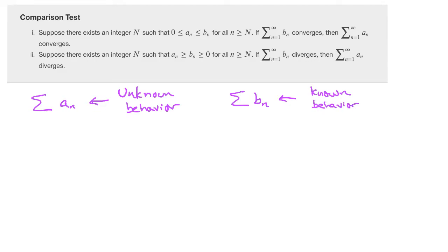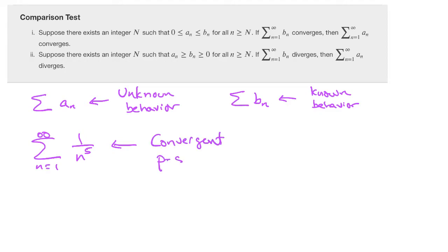In this case, our candidate series is the sum from n equals 1 to infinity of 1 over n to the fifth. This is a convergent p-series with p equal to 5. Remember, for p-series all we need is p greater than 1 for the series to converge. So our b sub n's have known behavior. When the terms of our known convergent series are larger than the terms of our unknown series, then our series a sub n will also converge.